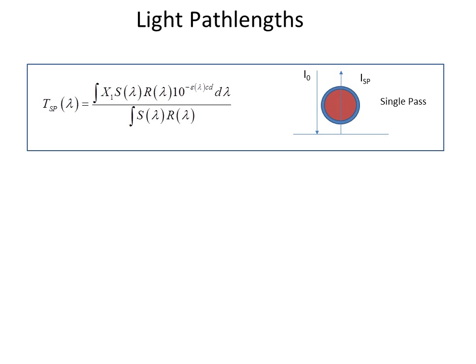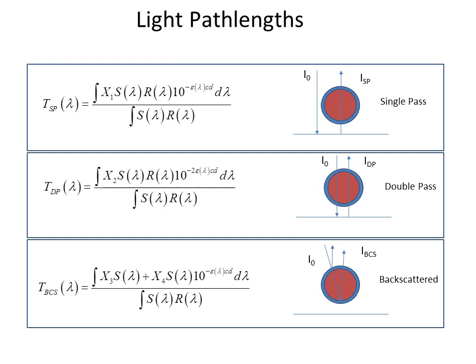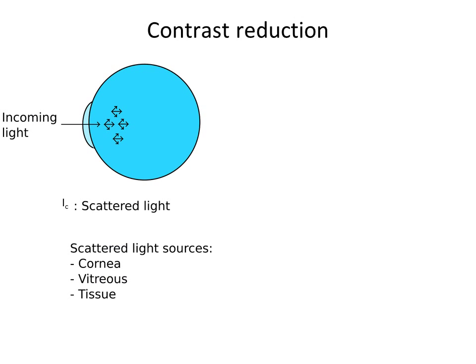This one will be double pass, which is light that passes twice through the vessel after being reflected on the background. It adds another extra parameter X2. And then backscattered light, which is light that never reaches the fundus but is backscattered from the vessel directly. And this one adds two more parameters, X3 and X4.